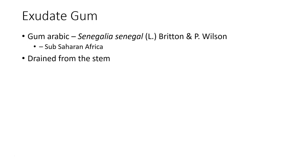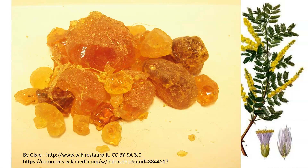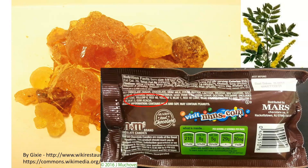Gum arabic comes from the plant Senegalia senegal from sub-Saharan Africa and was one of the first gums ever used. It was called gum arabic because it was taken to ports in Arabia where it was then distributed worldwide. It is drained out of the stem — not from the seeds — of this legume-type plant. The raw gum forms hard crystals that can be processed. It is used on the back of M&Ms as gum acacia, another name for gum arabic, to provide the hard candy shell.